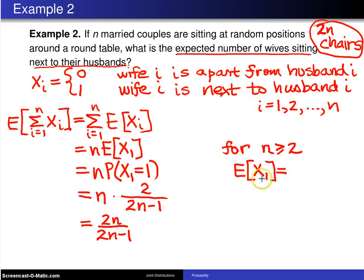And if you just have one couple, the number of wives sitting next to their husband has to be 1, not 2. So this one falls apart in the case of a single couple because you simply have the husband and wife sitting on opposite sides of a round table, and of course they are next to each other in that case.